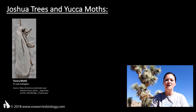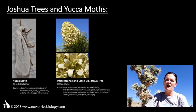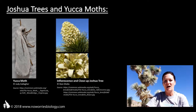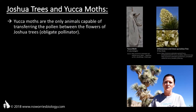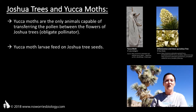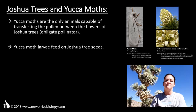The yucca moth is the only animal capable of transferring the pollen between the flowers of Joshua trees. This moth has developed specialized organs to collect and transfer the Joshua tree pollen. Therefore, without the yucca moth, Joshua trees would not be capable of producing seeds anymore. The moth benefits from this relationship as well — yucca moths lay their eggs into the ovaries of Joshua tree flowers, where they hatch, and the larvae then feed on the Joshua tree seeds. While this is definitely a cost for the Joshua trees, enough seeds remain uneaten to ensure the survival of the species. So without the Joshua trees, the yucca moth would no longer be capable of having surviving offspring either.